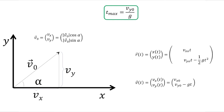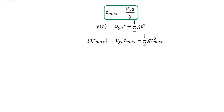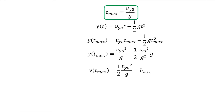Zurück zu unseren Bewegungsgleichungen. Bei meinem Schuss hatte mich vor allem interessiert, wie hoch der Ball kommt, um ihn über Stefan rüber zu loopen. Die Höhe ist über die y-Komponente der Ortsfunktion gegeben. Wir setzen also für t das zuvor bestimmte t_max ein: y(t_max) = Vy0·t_max − ½·g·t_max². Ersetzen wir t_max² und vereinfachen, erhalten wir als Endergebnis: y(t_max) = ½·Vy0² / g. Dies entspricht genau der gesuchten maximalen Höhe, die der Ball am höchsten Punkt erreicht.